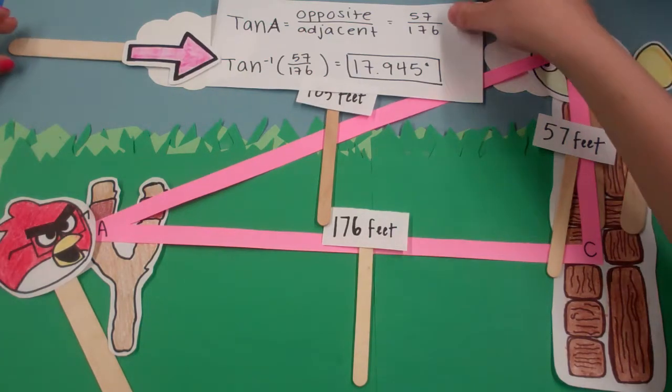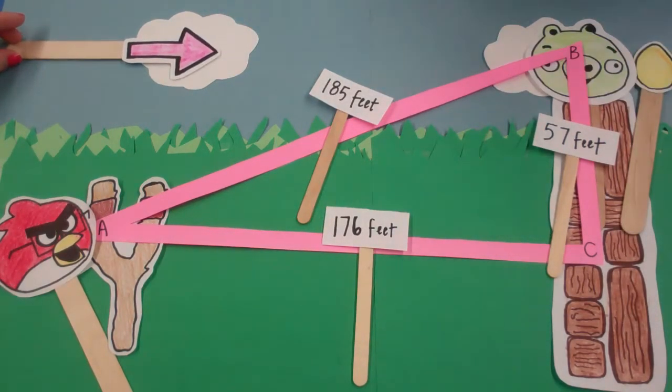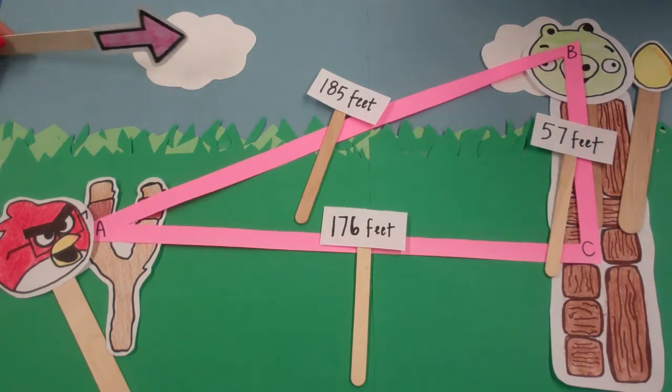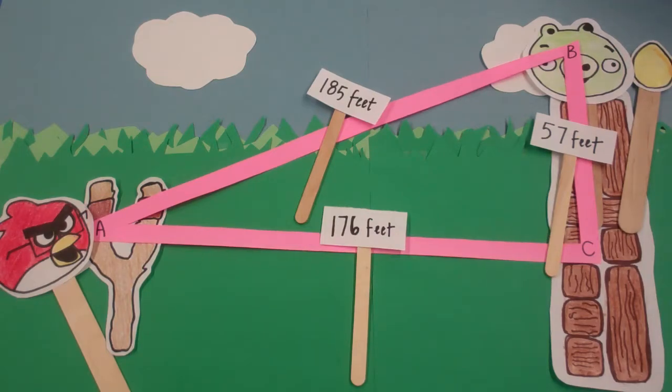Now the Angry Nerd knows that if he travels 185 feet, at 17.945 degrees, he will take down the evil pig and rescue his egg. Since the Angry Nerd only has one shot at taking down the pig, he wants to double-check the trajectory of his flight. To do this, he thought he would use the always reliable law of sines.